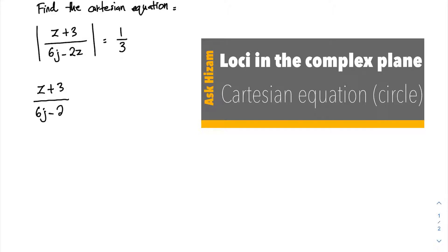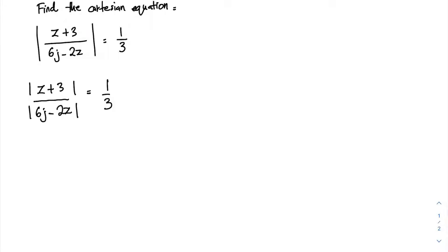In this equation, we have the modulus of z plus 3 over 6j minus 2z equal to 1 over 3. We can separate this modulus and do cross multiplication.